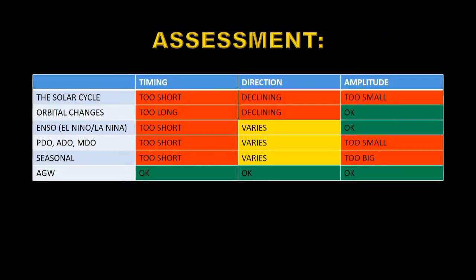Let's do a quick assessment comparing each factor against the various explanations for global warming. First, the solar cycle: on timing, it's too short; on direction, its energy is currently declining, which is the wrong direction; and the amplitude is too small — only 0.1% — and we need a much larger amplitude than that.